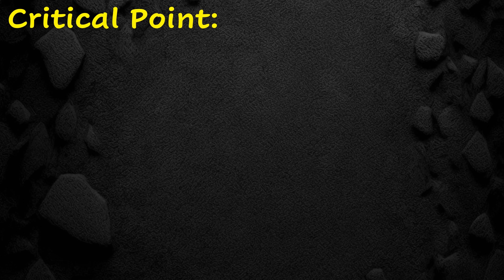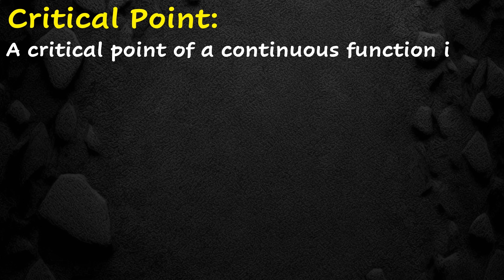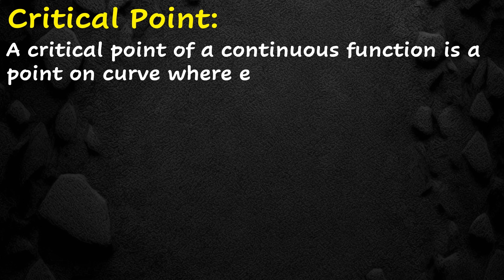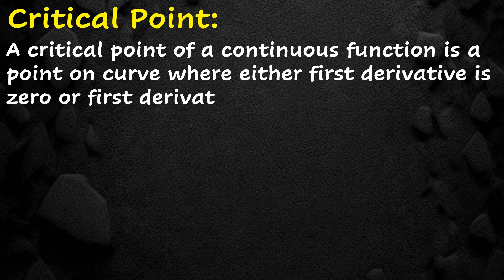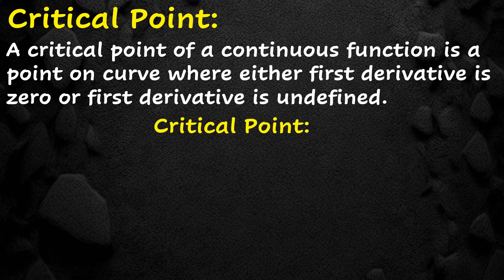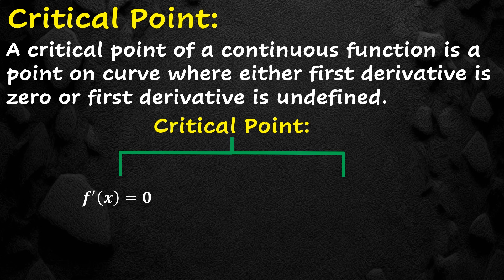A critical point of a continuous function is a point on the curve where either the first derivative is zero or the first derivative is undefined. So a critical point is where the first derivative is zero or where the first derivative does not exist.